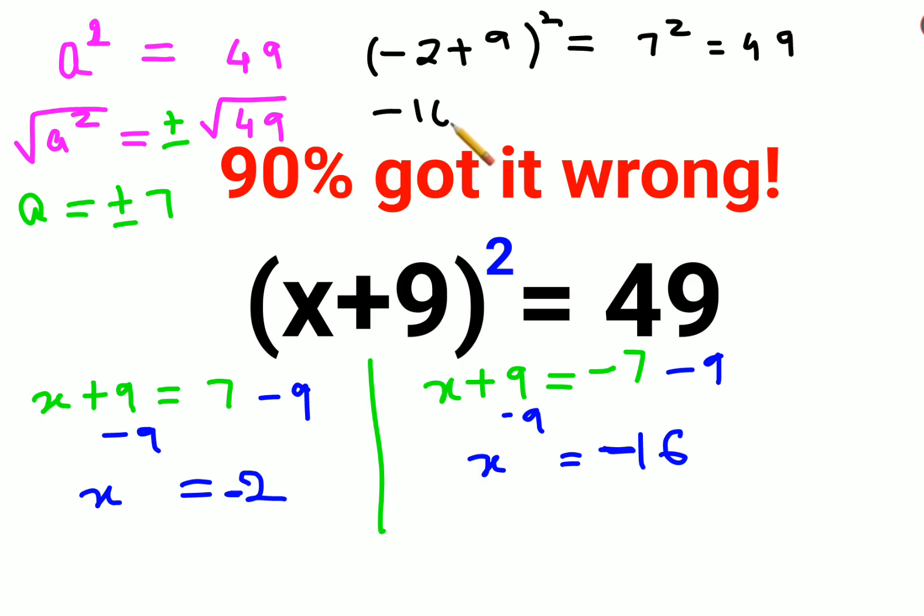Next, we have minus 16 plus 9, the whole squared, which is minus 7 the whole squared. The square of a negative number always gives you a positive answer, which is 49.